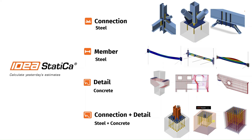If you are working with Steel, we do have the Connection and the Member application. Within Connection, you are able to model any geometry from simple to complex, run the analysis, and the results can be checked against AISC and ACI formulas so that you are able to get your component checks for your bolts, welds, anchors, and much more.